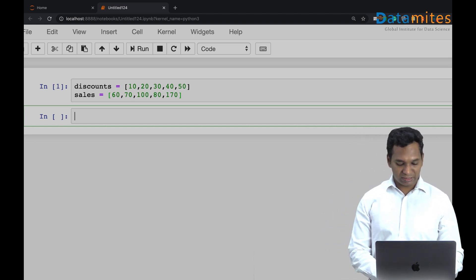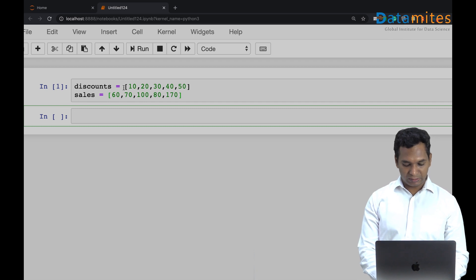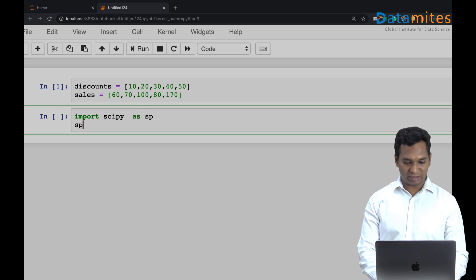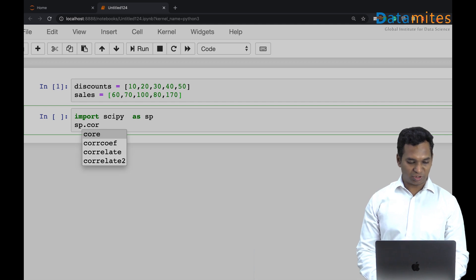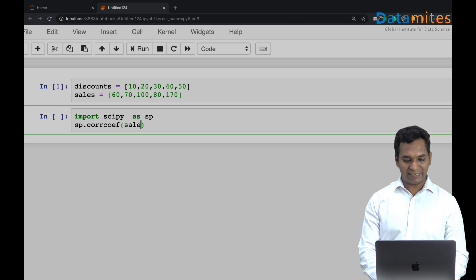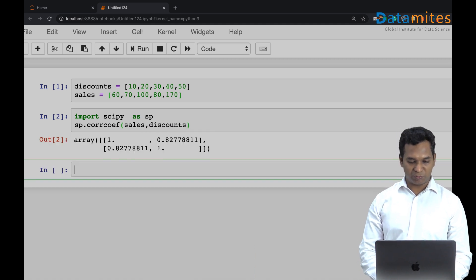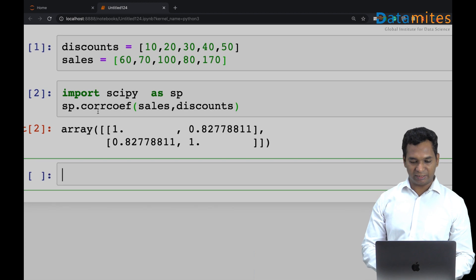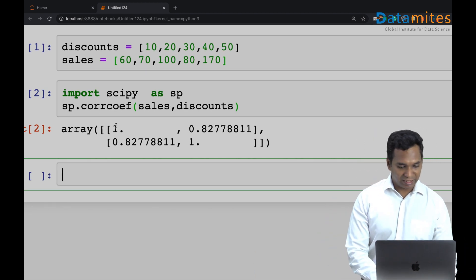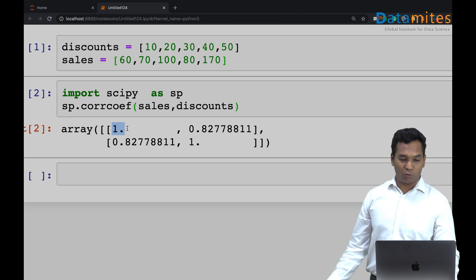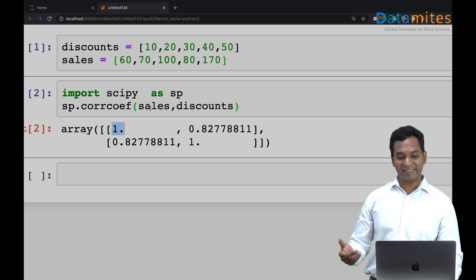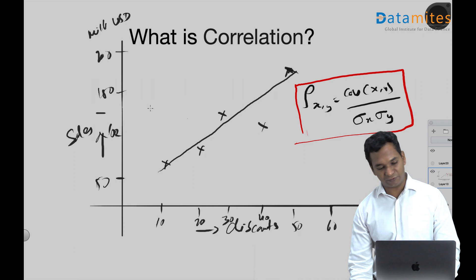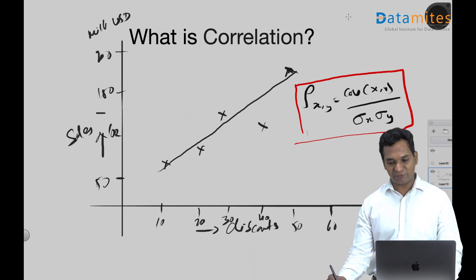To find the correlation, there are many packages. I'm going to use scientific Python, SciPy, as correlation coefficient. So I'm going to say I want to find a correlation between sales and discounts, and it gives me a matrix array which has four values. This value represents correlation sales with the sales itself. So if you correlate sales with the sales itself, for example, x with x itself, then you get one, because obviously x and x are same variables.